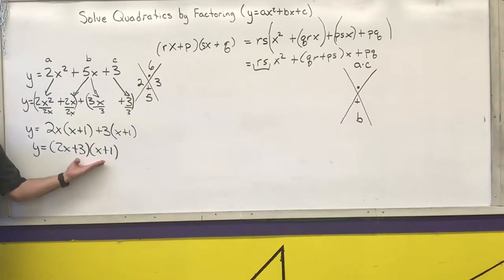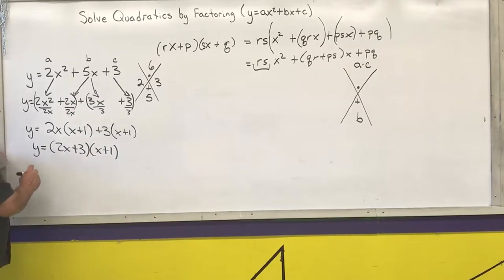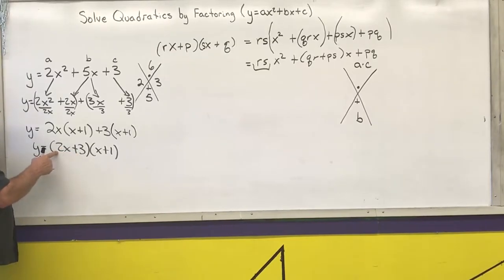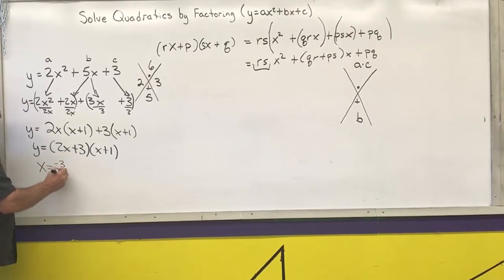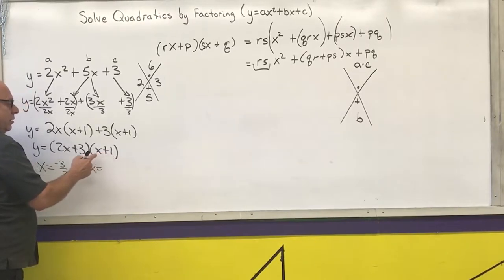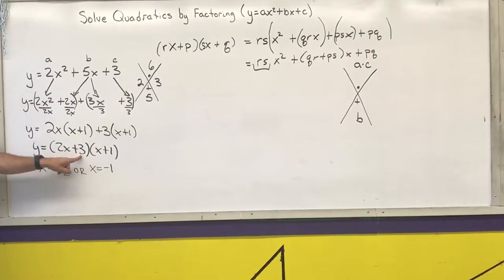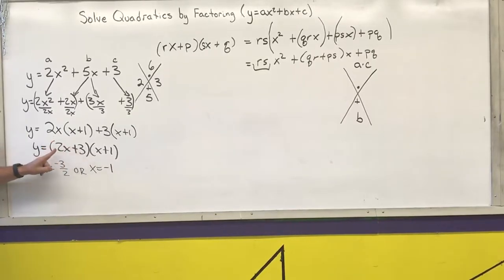So that is factored. Now we can use the zero product property to solve by setting each factor equal to zero. I am going to show you my shortcut: change this sign and then divide by this number. So I write negative 3 over 2. x equals negative 1 over 1, which is negative 1. Once you have it in factored form, use that shortcut — change the sign of the last term and divide by the coefficient of the first term.